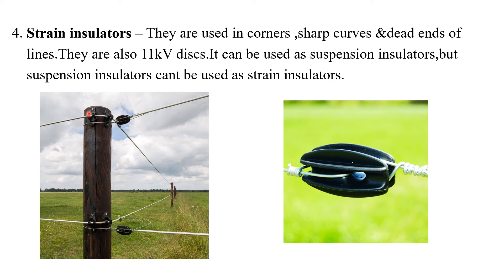The fourth type of insulator is the strain insulator. They are used at corners, sharp curves, or dead ends of the lines. An important point is that strain insulators can be used as suspension insulators, but suspension insulators cannot be used as strain insulators. That is the important comparison between suspension and strain insulators.